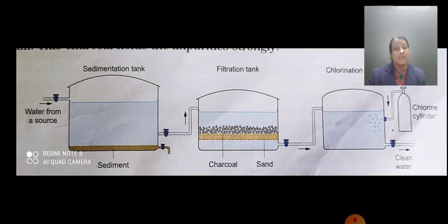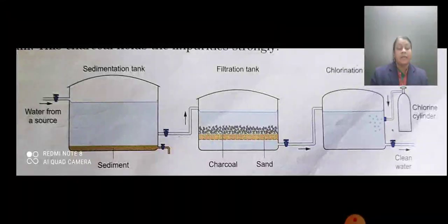Now what is meant by activated charcoal? Activated charcoal is a special type of charcoal made by heating ordinary charcoal in vacuum. This charcoal holds the impurities strongly. Most impurities are removed here.